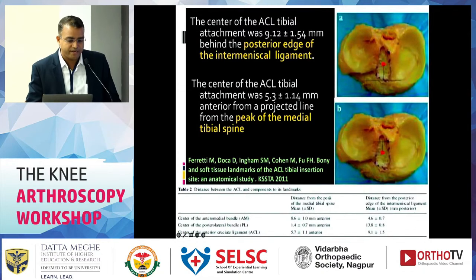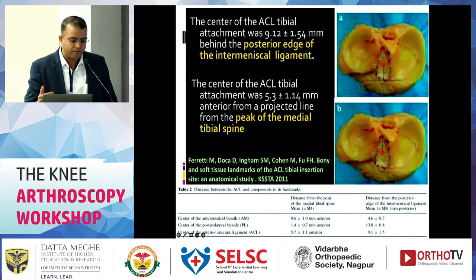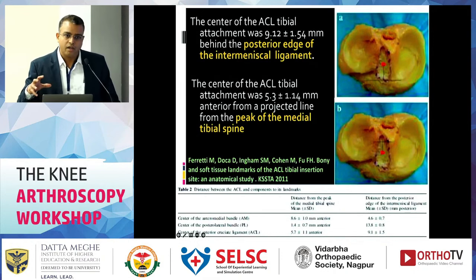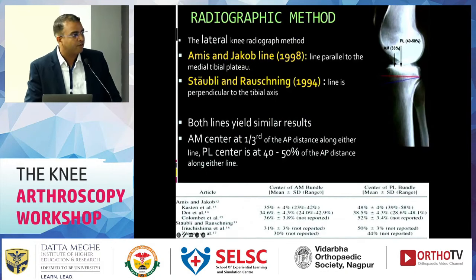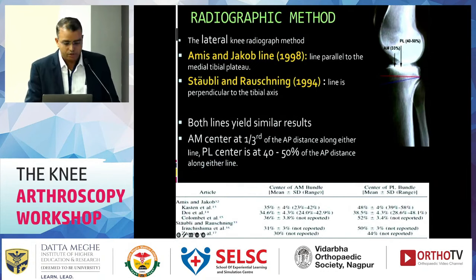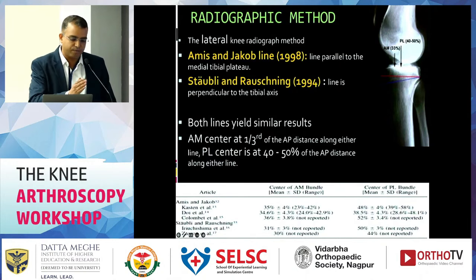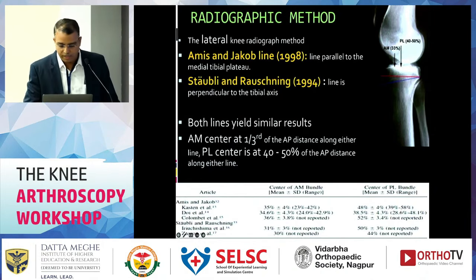The center of the ACL tibial attachment is almost 9 to 10 mm behind the posterior edge of the intermeniscal ligament, and 5 to 6 mm anterior from the projected line from the peak of the tibial spine. Taking all these landmarks into consideration, you can define a point when the footprint of the tibial attachment is not clearly visible. Radiographic methods such as the MS and Jacob line (parallel to the medial tibial plateau) or the Stäubli/Rauschning line (perpendicular to the tibial axis) are also available. The anteromedial bundle center is at approximately 30% from the anterior side, and the posterolateral bundle is at 40 to 50% of the distance from the anterior side.